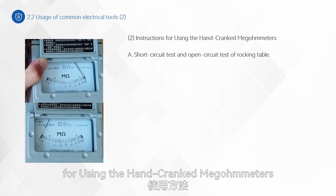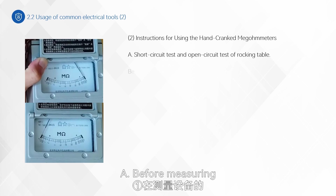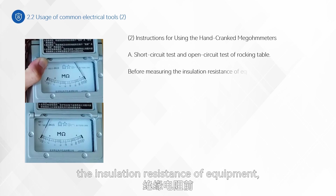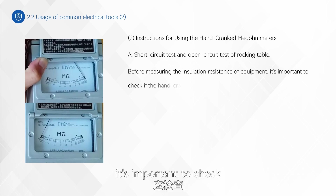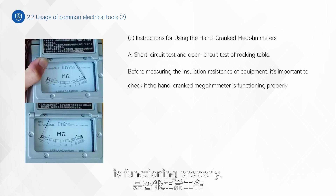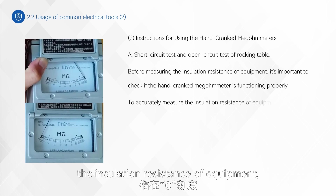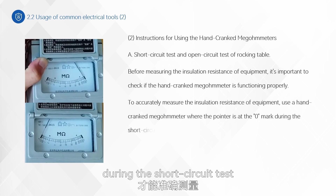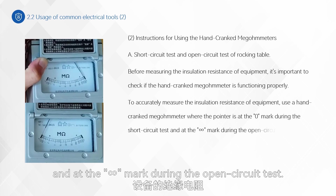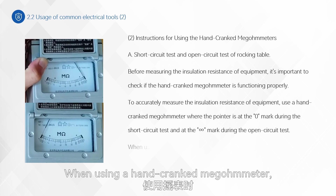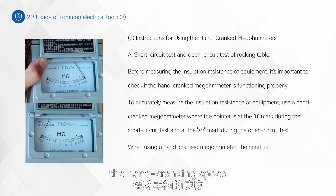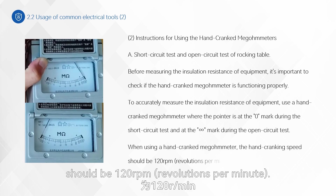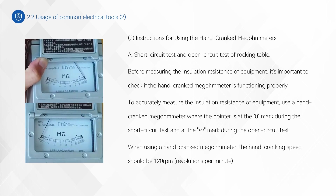Instructions for using the hand-cranked megometer. Before measuring the insulation resistance of equipment, it's important to check if the hand-cranked megometer is functioning properly. Use a megometer where the pointer is at the zero mark during the short-circuit test and at the infinity mark during the open-circuit test. When using a hand-cranked megometer, the hand-cranking speed should be 120 rpm (revolutions per minute).